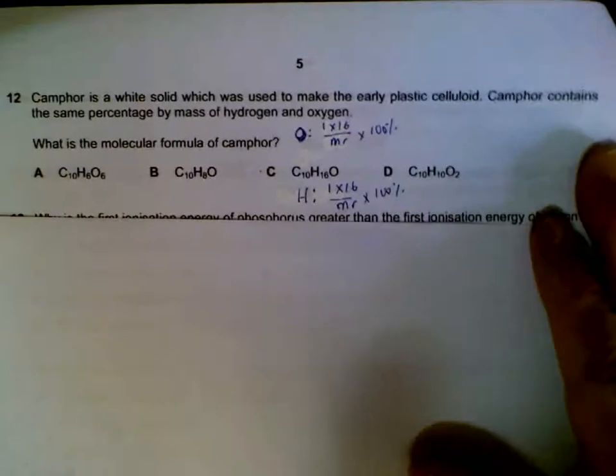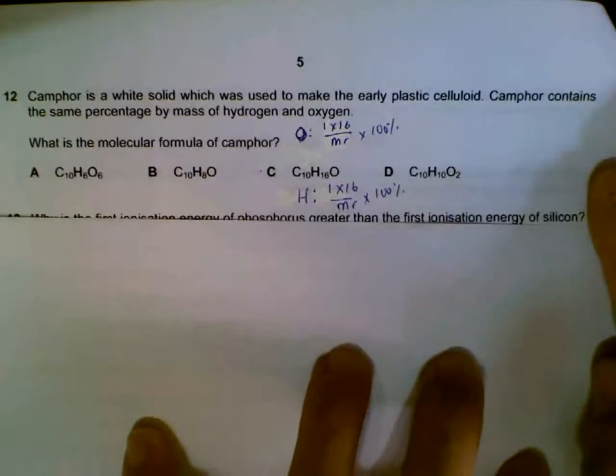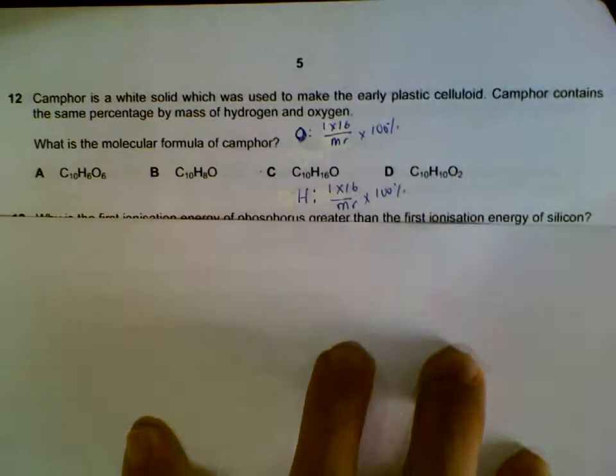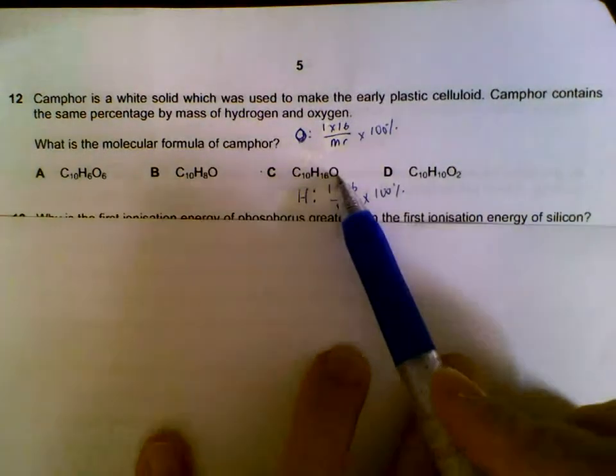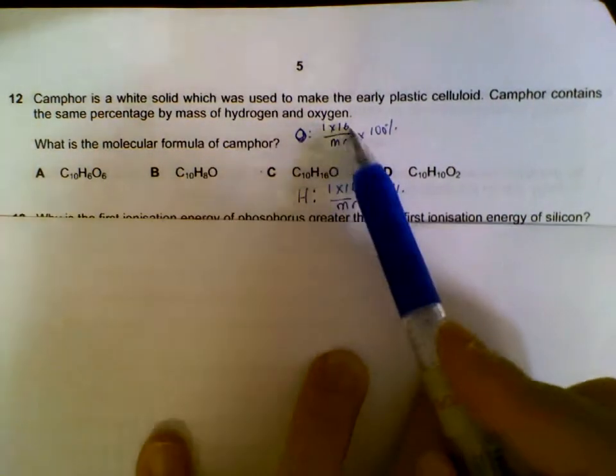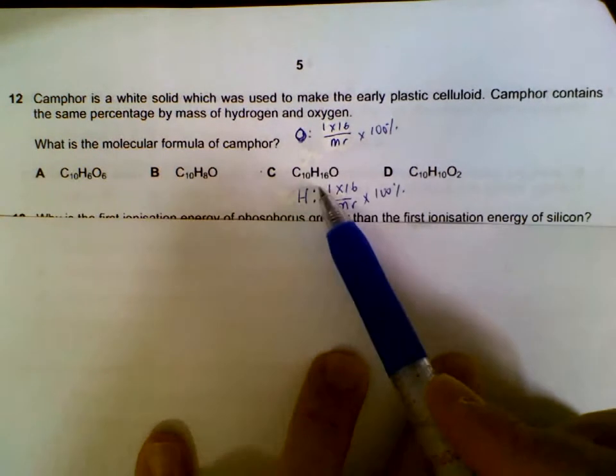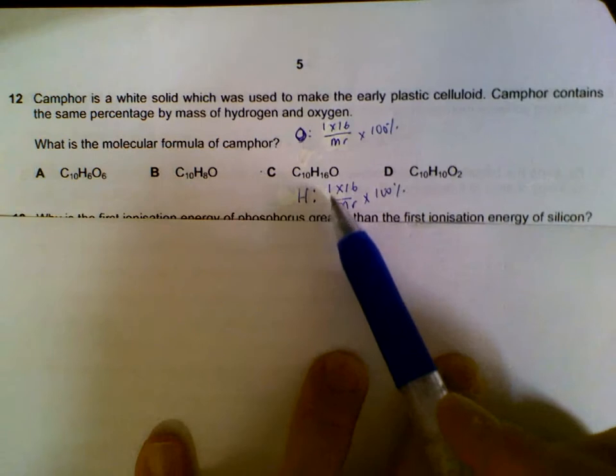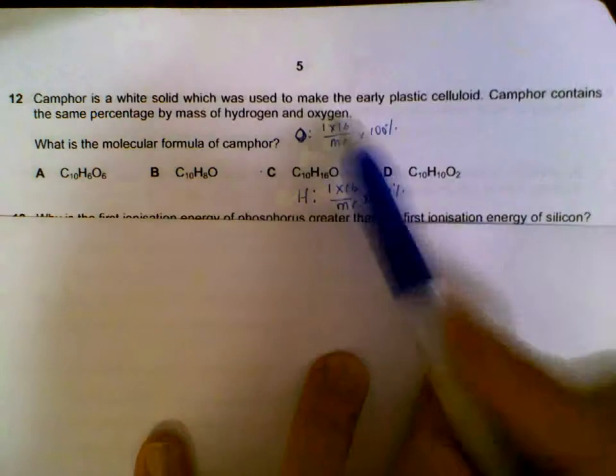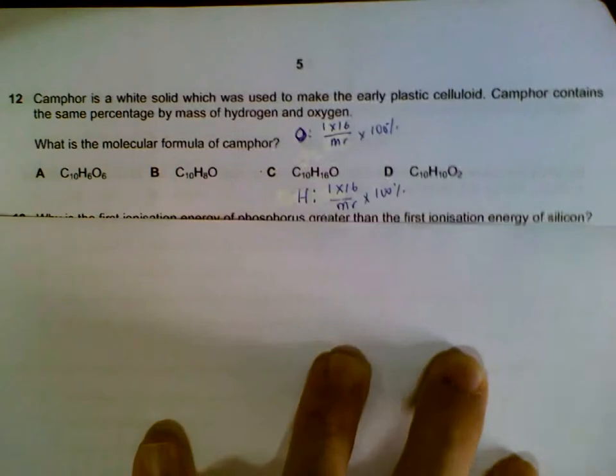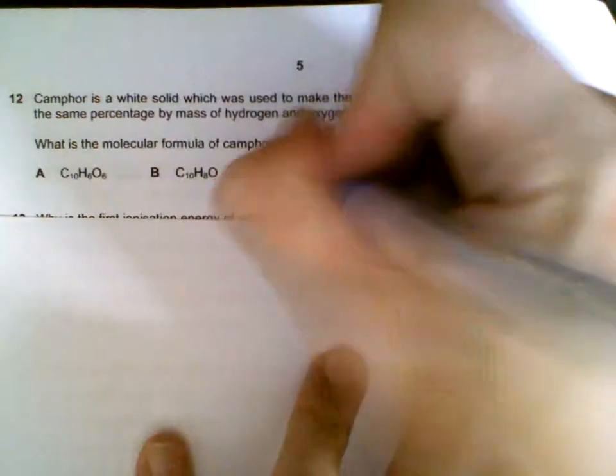Number 12. Which one has the same percentage mass of hydrogen and oxygen? Answer is C. Here we have 1 oxygen. Contribution to the MR will be 1 multiplied by 16. And we have 16 hydrogen. Contribution to the MR will be 1 times the 16 hydrogen. So they have the same contribution to the MR. They will have the same percentage by mass for both hydrogen and oxygen.